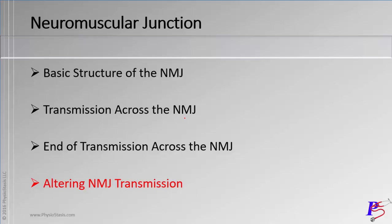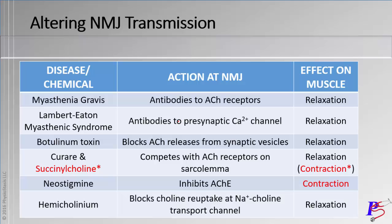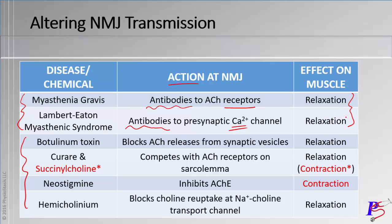Now let's discuss drugs and diseases that alter transmission across the neuromuscular junction. In a summary table, the first two are diseases: myasthenia gravis and Lambert-Eaton syndrome — both autoimmune. Myasthenia gravis produces antibodies against the acetylcholine receptors, while Lambert-Eaton produces antibodies against the voltage-gated calcium channels. Both cause muscle weakness or relaxation, as do most of the other entries.